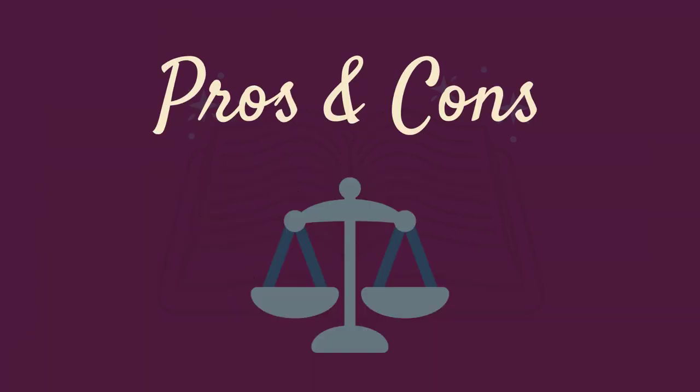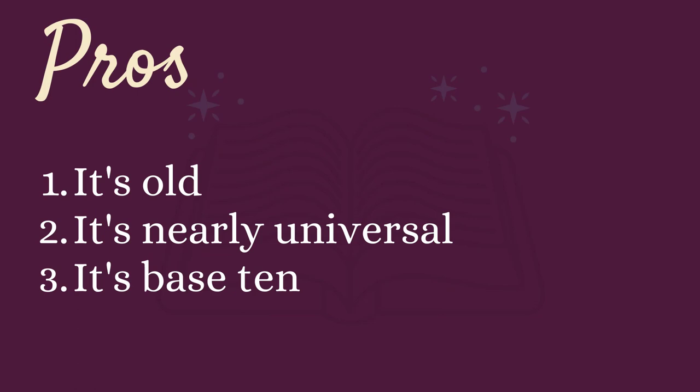So let's talk pros and cons. On the pros side: first of all, it's old — we're on our 23rd version of this, and it's one of the two most common classification systems in the US, along with the Library of Congress system. Second, it's nearly universal through all public libraries, so it makes it easier for patrons to find things no matter where they are. Third, it's base 10, which breaks things into groups of 10 and makes it pretty neat and easy to remember, and the way it breaks things down makes sense for the most part.